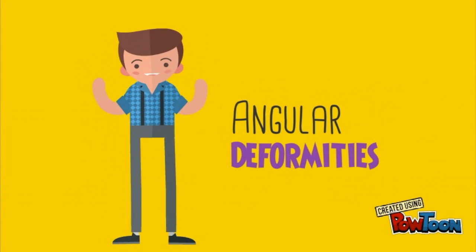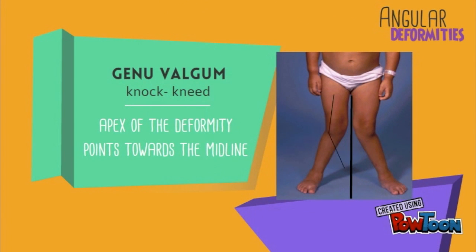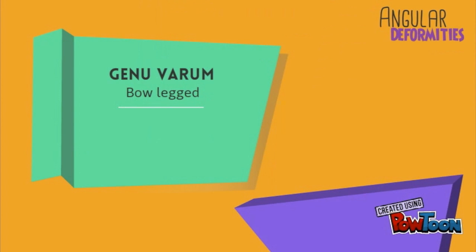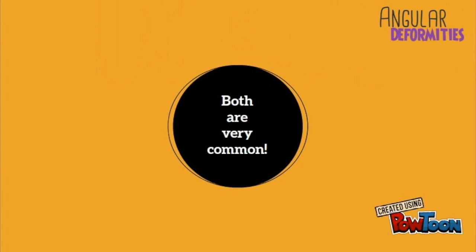Angular deformities. Genu valgum is when there is an angular deformity at the knee where the apex of the deformity points towards the midline. Genu varum is an angular deformity at the knee where the apex of the deformity points away from the midline. Both are very common and can be a variation of normal physiological development or can be pathological.